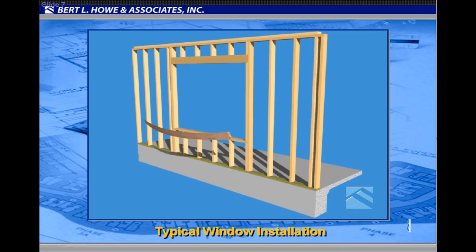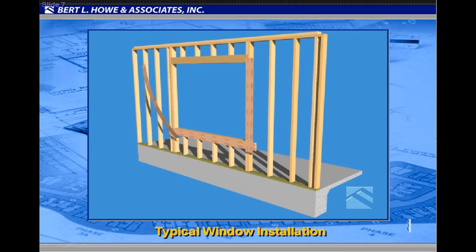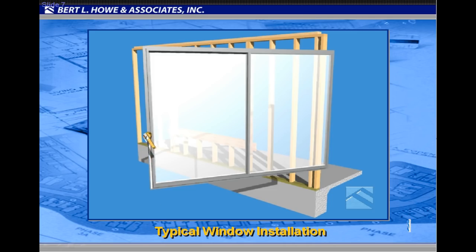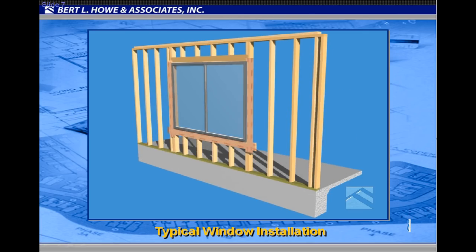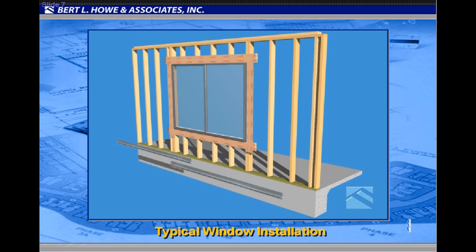The first step in the process is flashing the window. A strip of flashing paper is cut and placed along the bottom or sill of the window, followed by flashing paper along the sides or jambs. A bead of sealant is placed on the back side of the window nailing flange, the window is pressed into place and fastened, and then a strip of flashing material is placed along the top or head of the window.